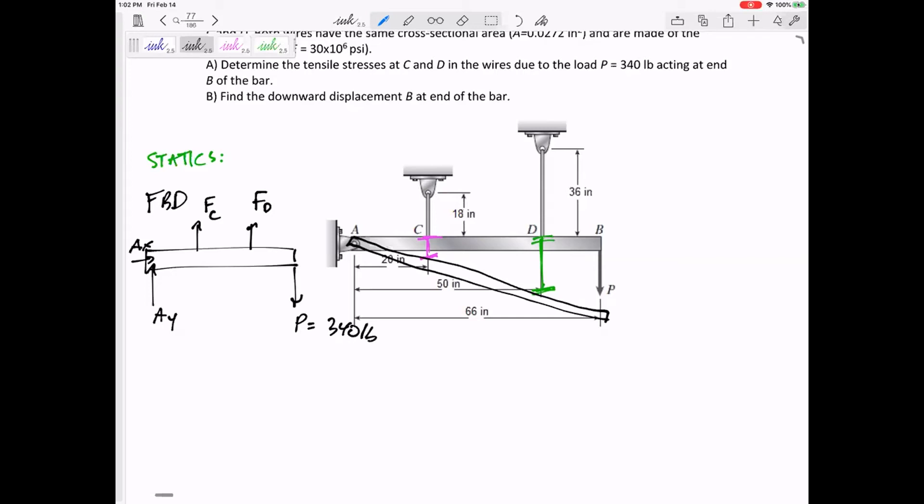This problem and these problems that are statically indeterminate, problems where if you did the statics, you should do the statics, go ahead and attempt the statics. But if you do the statics and you have too many unknowns, our extra equation is our compatibility equation, and that compatibility equation is something about the delta L, something about the change in lengths.